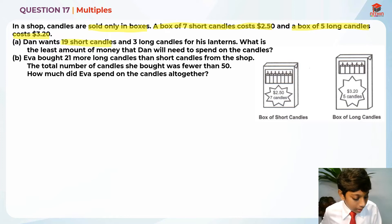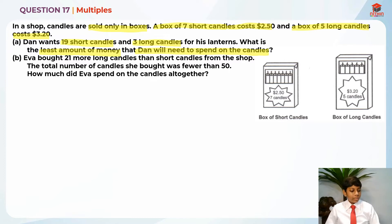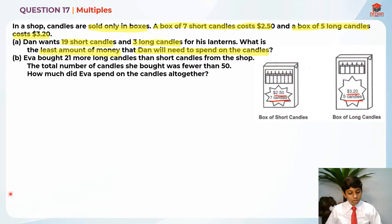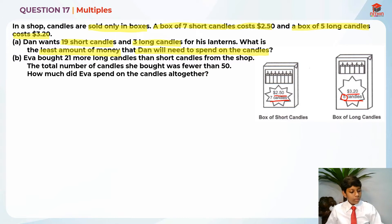So we have seven short candles for $2.50 and five long candles for $3.20. For the three long candles, we can just use one box because five is already greater than three. Since they are only sold in boxes, we can use that one box and we do not need to work out anything further for the long candles.